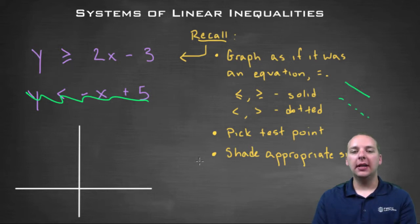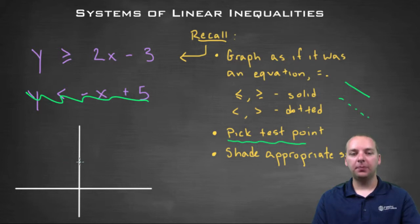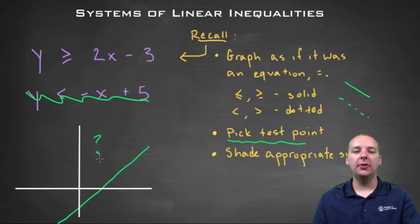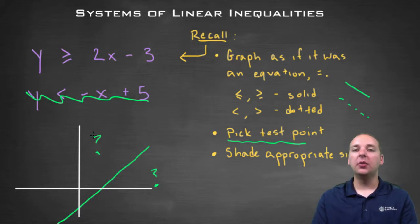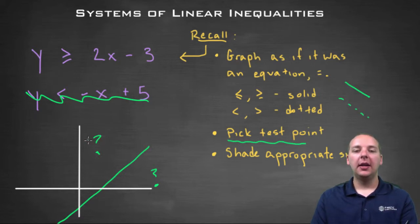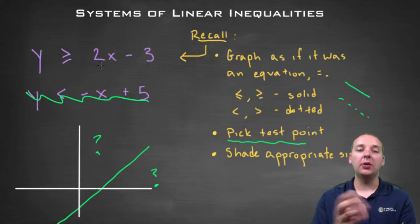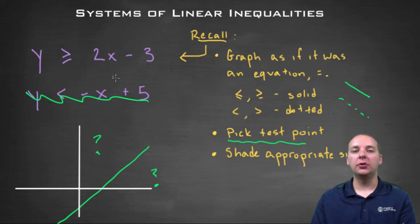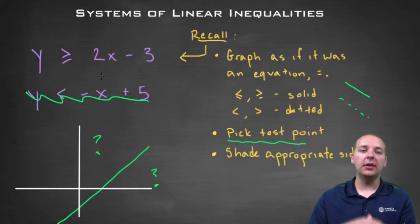The next thing we do is pick a test point clearly on one of the sides. For example, if your line looks something like this, you would pick a test point on either side — it doesn't matter. I usually recommend using zero, zero if possible. Based on that test point, you plug in that x, y value and see if the inequality turns out to be true. Based on whether it's true or false, you're either going to shade the side that the test point is on, or shade the other side.